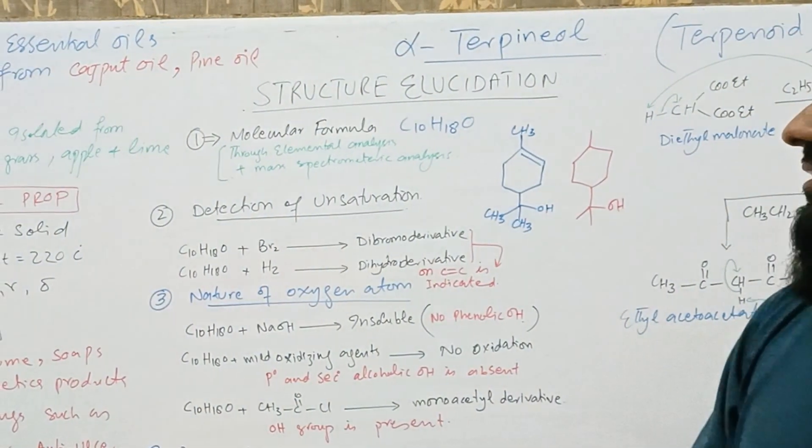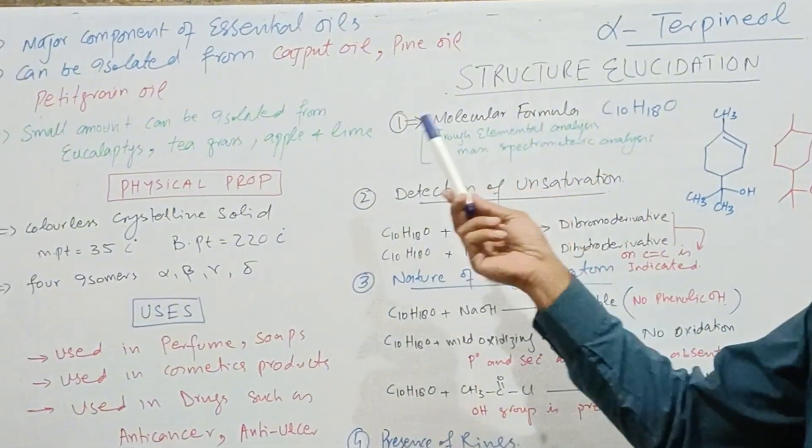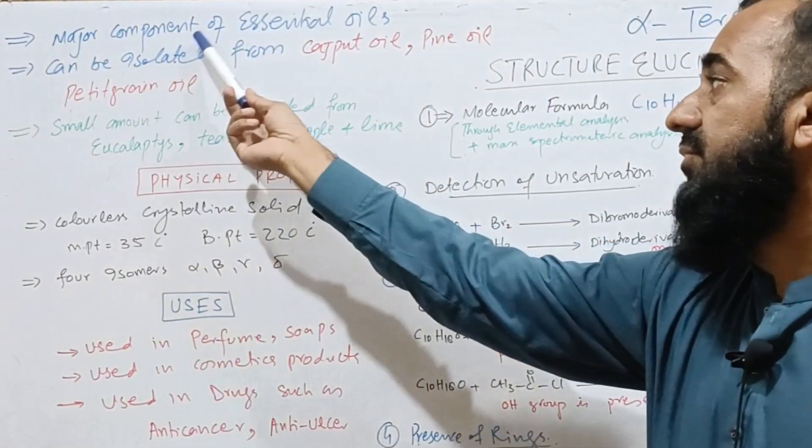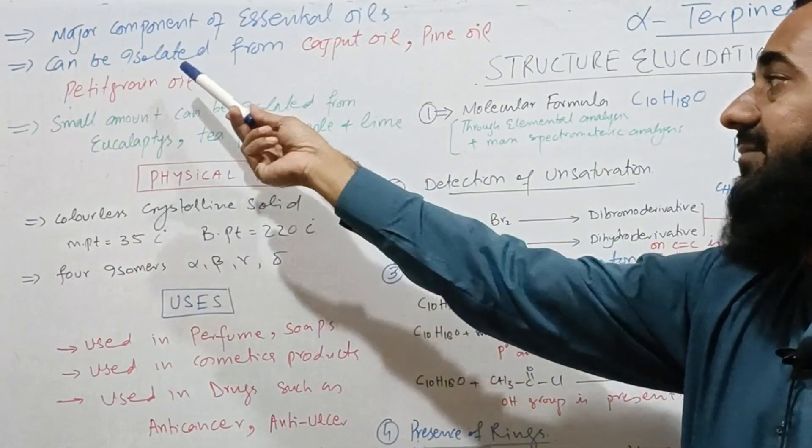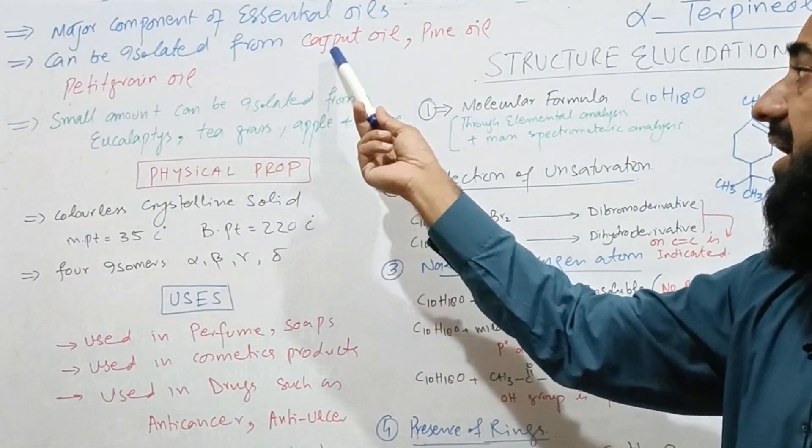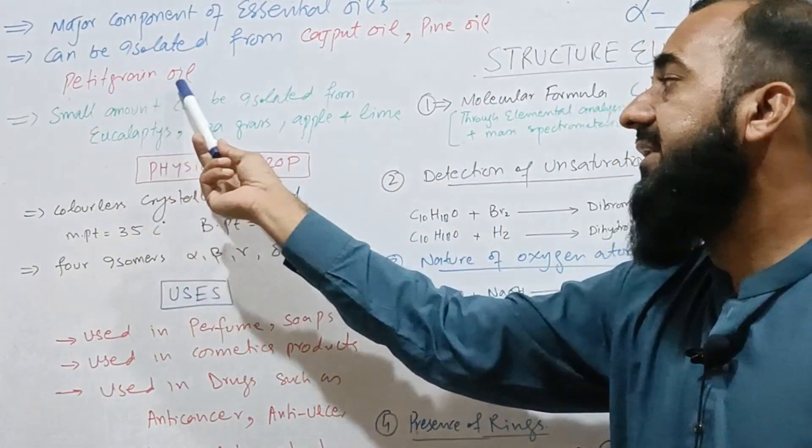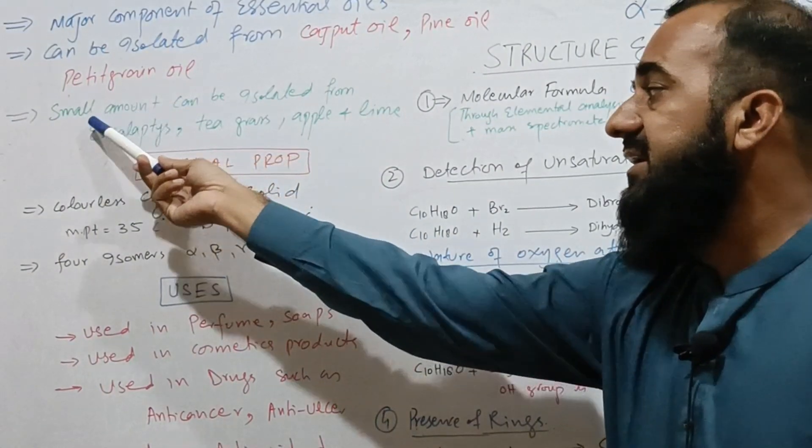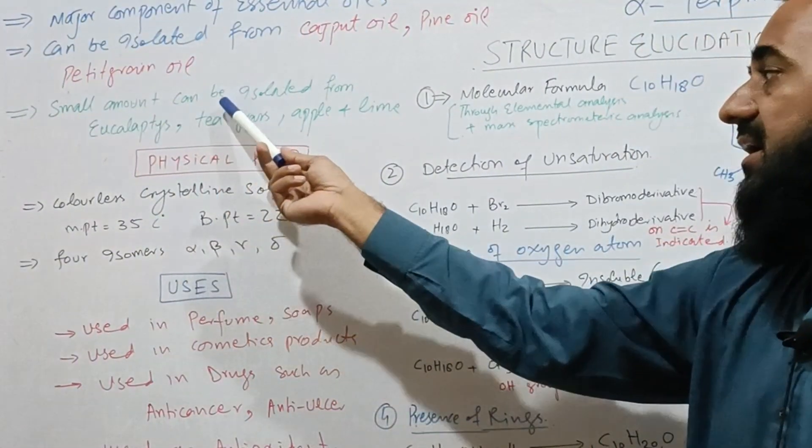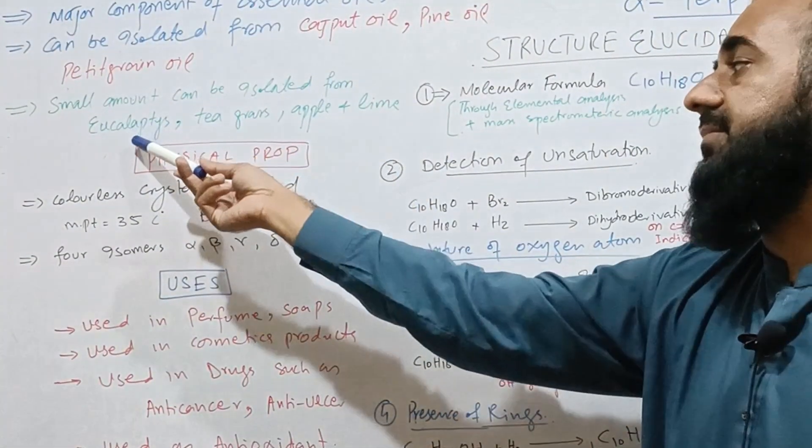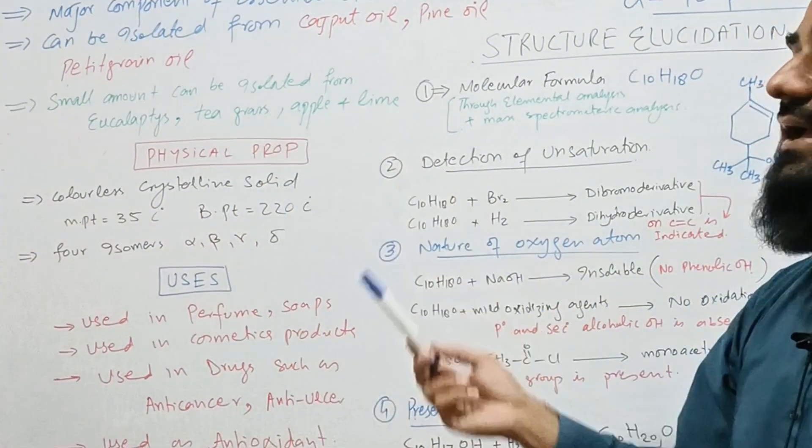Alpha-terpineol is a major component of essential oil. It can be isolated from cajuput oil, pine oil, or patchouli grain oil, and in small amounts from eucalyptus, tea grass, apple, and lime.